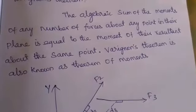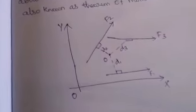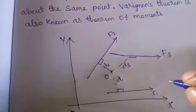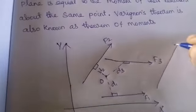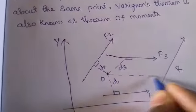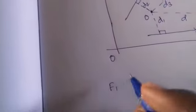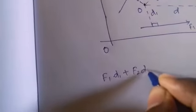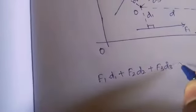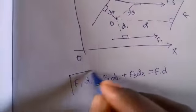The algebraic sum of moments of any number of forces about any point in their plane is equal to the moment of their resultant about the same point. Mathematically: F1·D1 + F2·D2 + F3·D3 = R·D, where R is the resultant force and D is its perpendicular distance. This is Varignon's theorem.